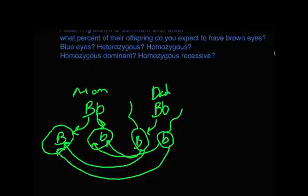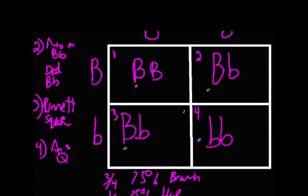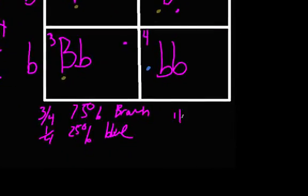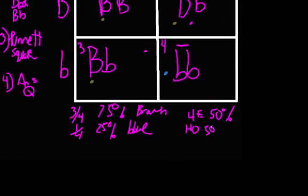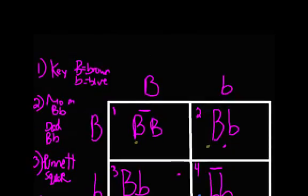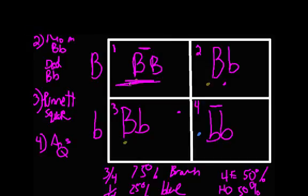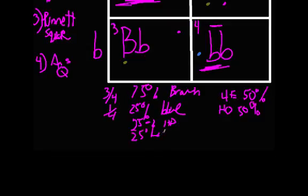The next question asks what percentage will be heterozygous versus homozygous. Two of the four offspring are heterozygous — so 50% are heterozygous. The remaining two are homozygous — also 50%. Finally, looking at homozygous dominant versus homozygous recessive: only one offspring is big B, big B, so 25% are homozygous dominant. And only one offspring is little b, little b, so 25% are homozygous recessive.